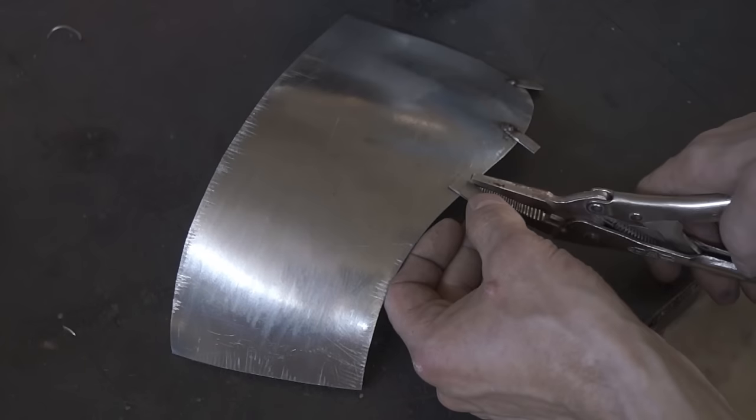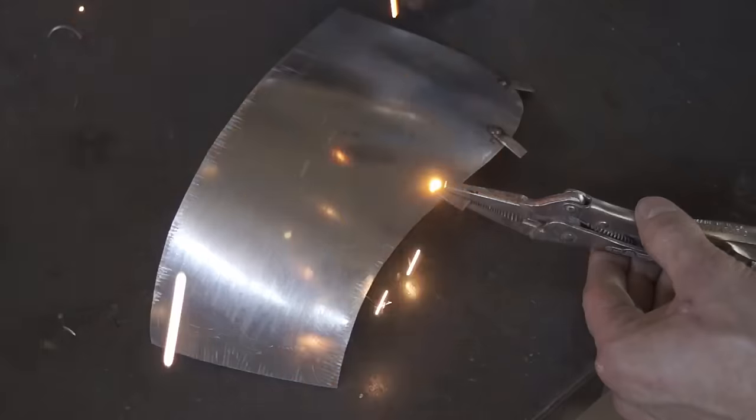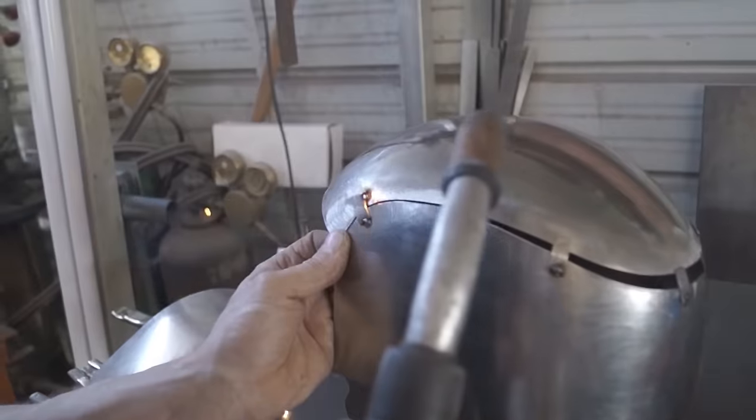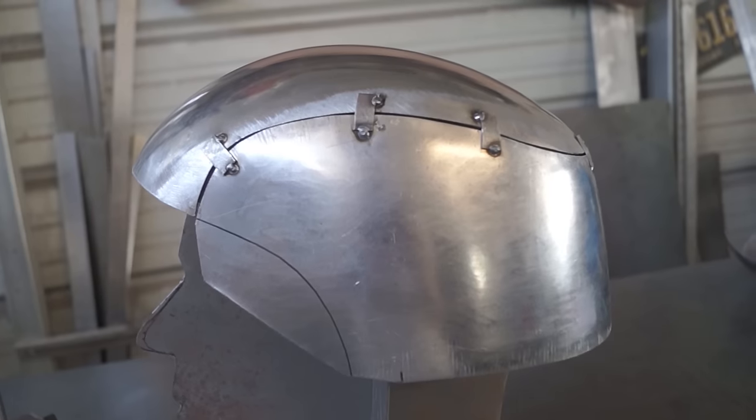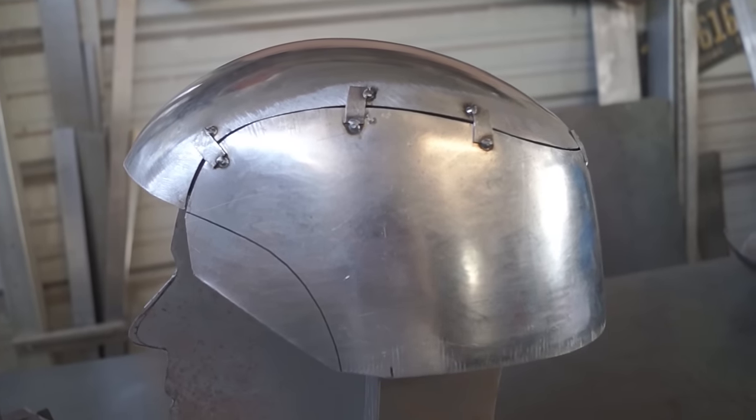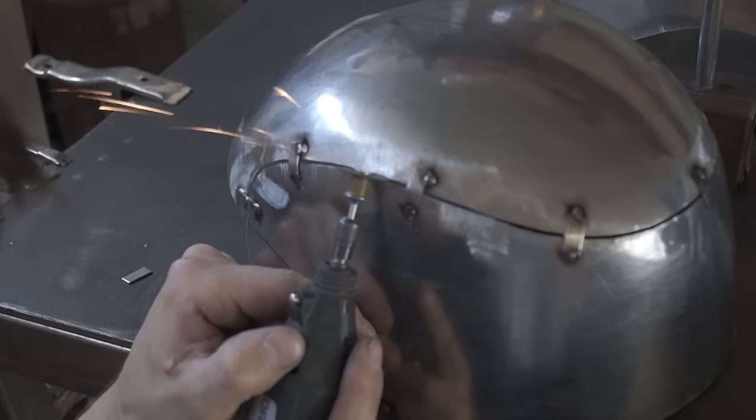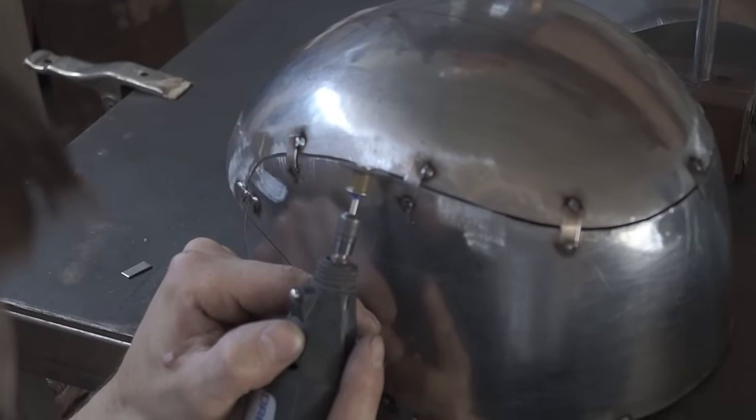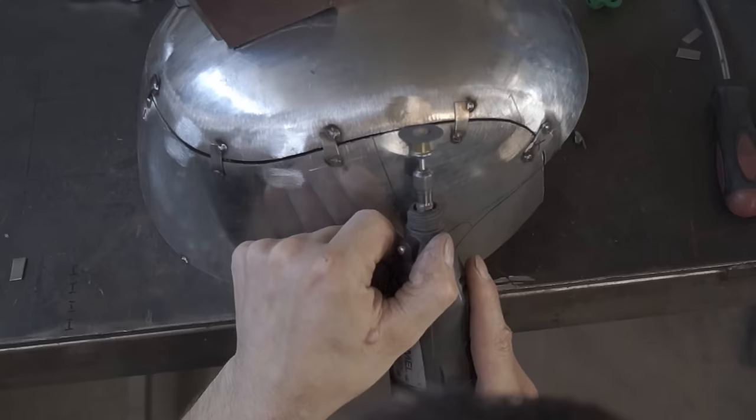Now I'm welding on temporary tabs to hold the two halves together. Now that I got the two halves temporary tacked together, I used a cutoff wheel on the dremel to smooth out the lines. This line will make up the detail on the side of the helmet.